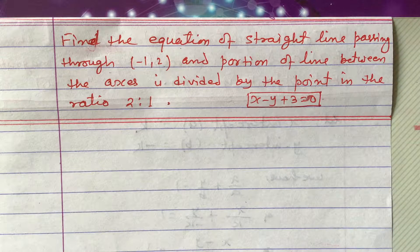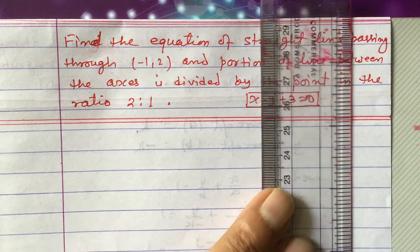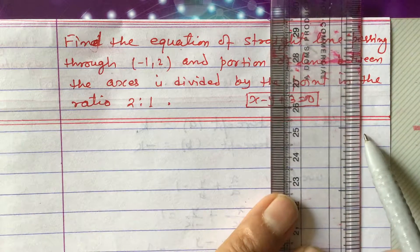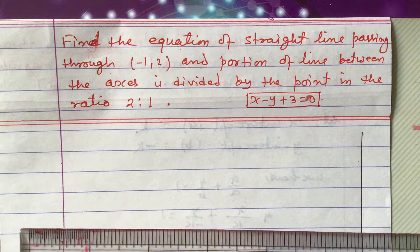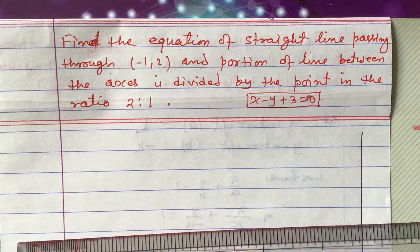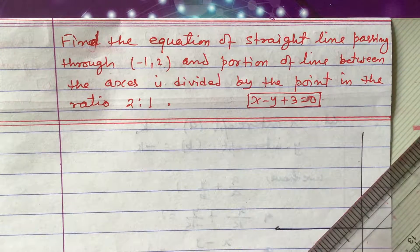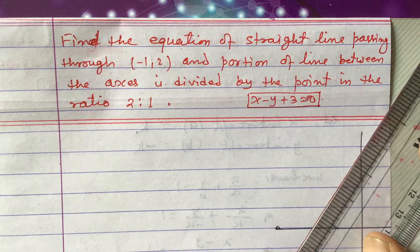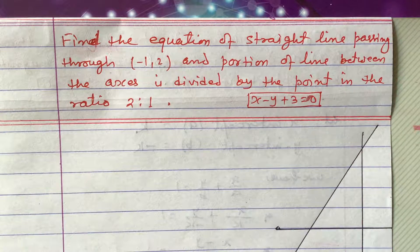Since ratio is given, we need to apply the section formula. Let us draw a figure. The point minus 1 comma 2 lies in the second quadrant, so we make the second quadrant bigger. The first quadrant we don't need to make bigger. The line passing through minus 1 comma 2 will go up a little bit like this.